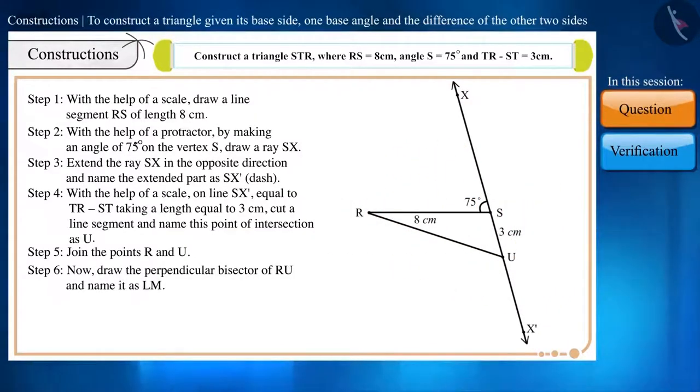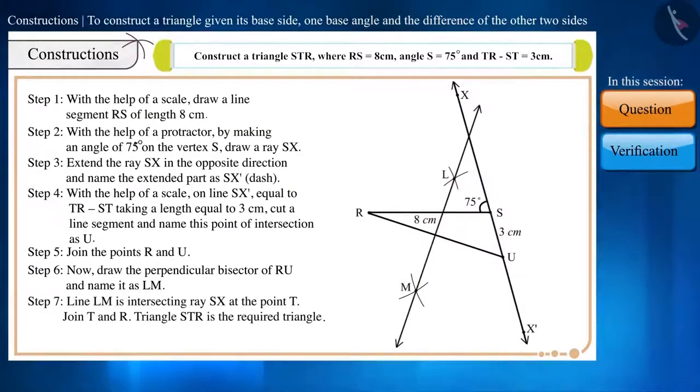Step 6. Now, let's draw the perpendicular bisector of RU and name it as LM.